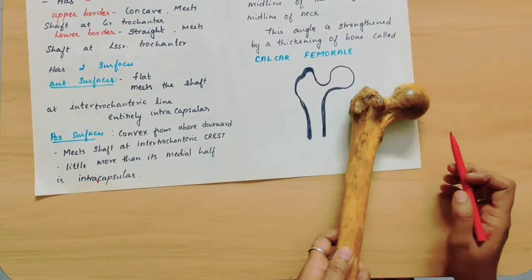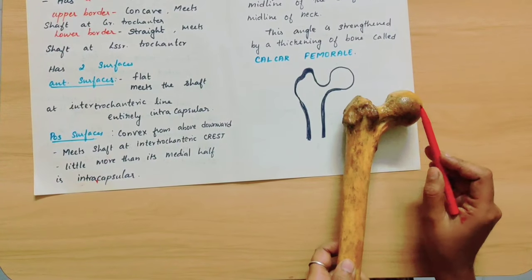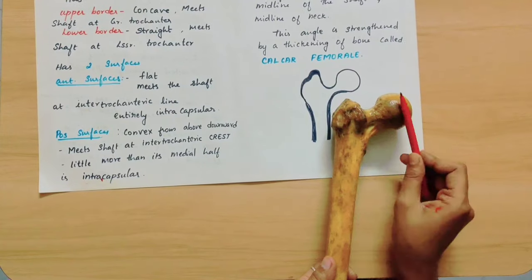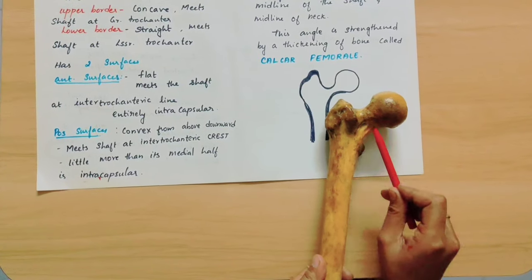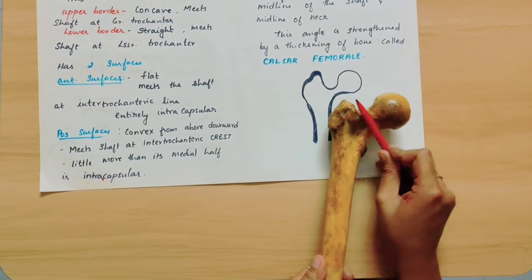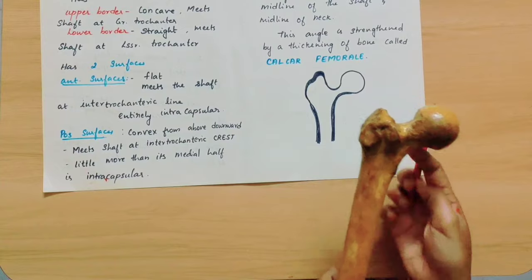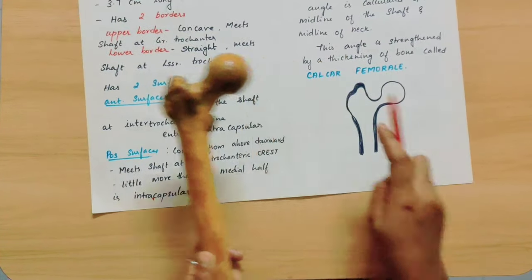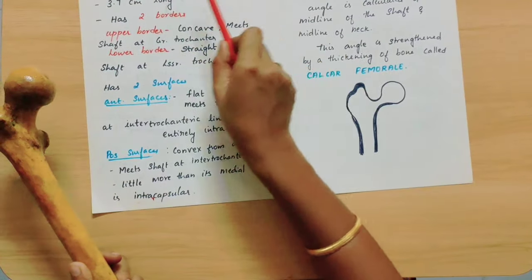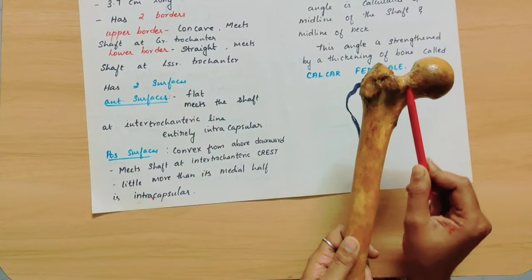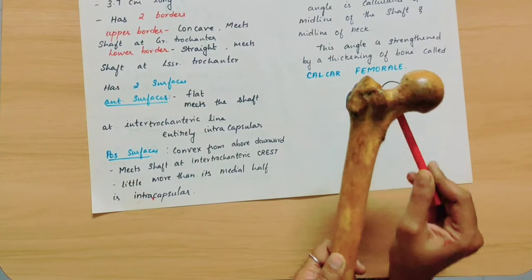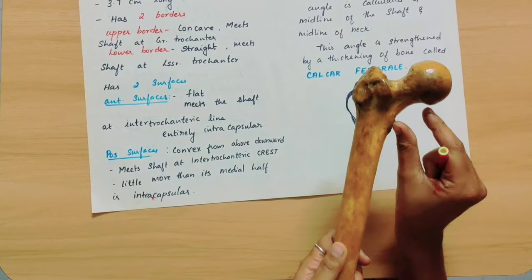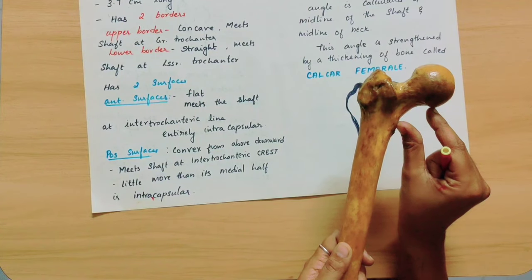Now coming to the neck. The neck connects the head with the shaft. The head and the shaft are connected by a region we call the neck. The neck is 3.7 cm long.